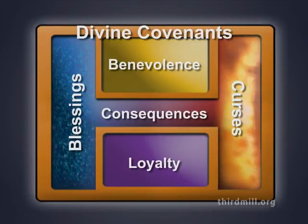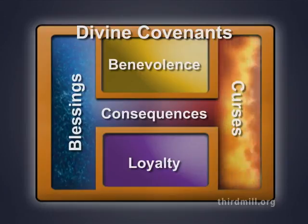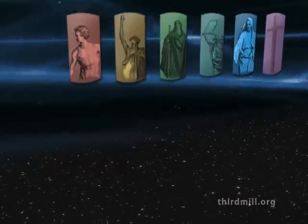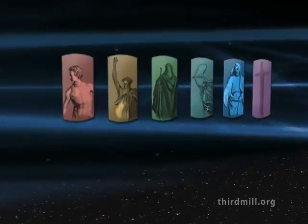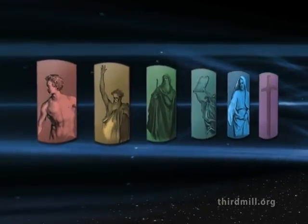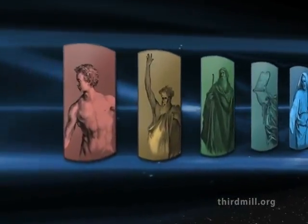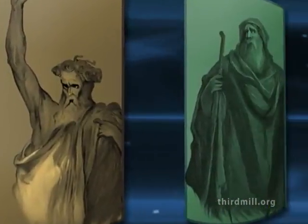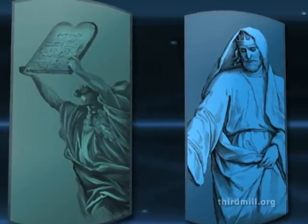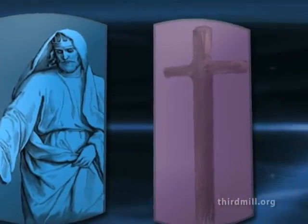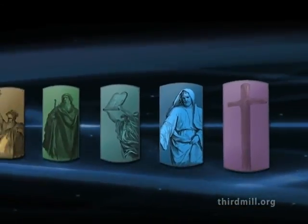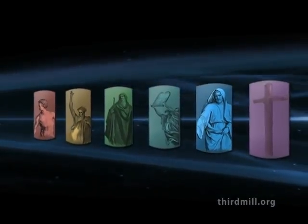These covenantal dynamics remained constant throughout the entire Old Testament, so they are useful for organizing the many theological structures that appear in Old Testament history. But the Old Testament was not nearly covenantal in this general sense. There were six times when God established major covenants with distinctive theological emphases: the covenants with Adam, Noah, Abraham, Moses, David, and the New Covenant. For our purposes in this lesson, it will suffice to give a quick overview of the theological emphases of each major covenant.